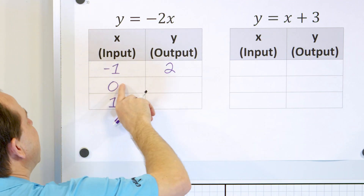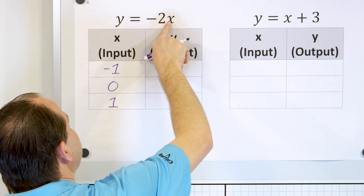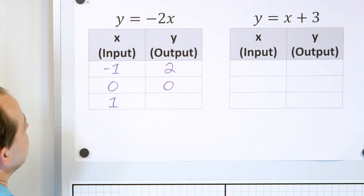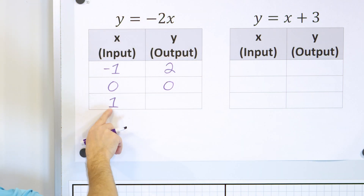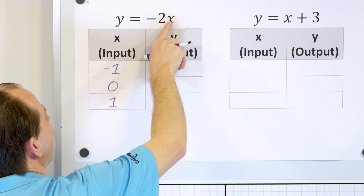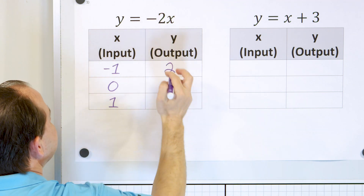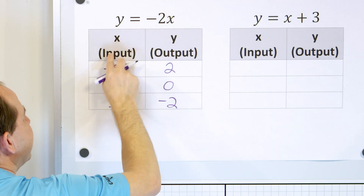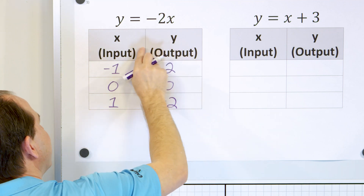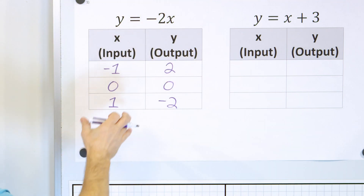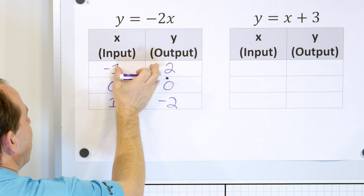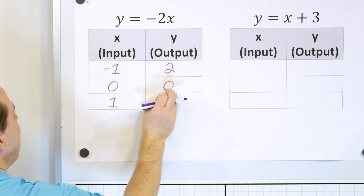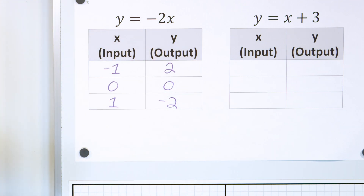If I put an x value of 0 in, negative 2 times 0 gives me 0. And if I put positive 1 in, negative 2 times positive 1 is negative 2. So here's the input-output table for the first line. I'm going to plot these points — x, y; x, y — and draw a line.